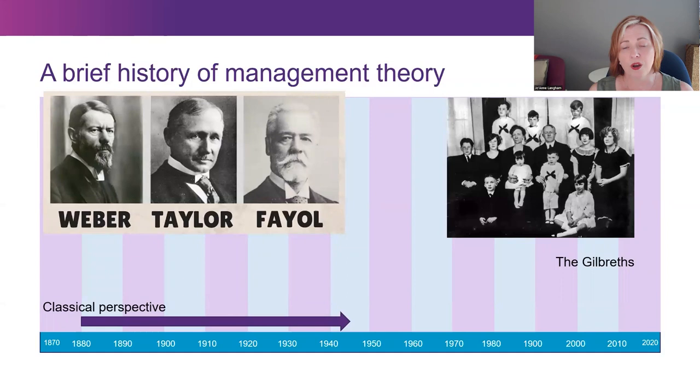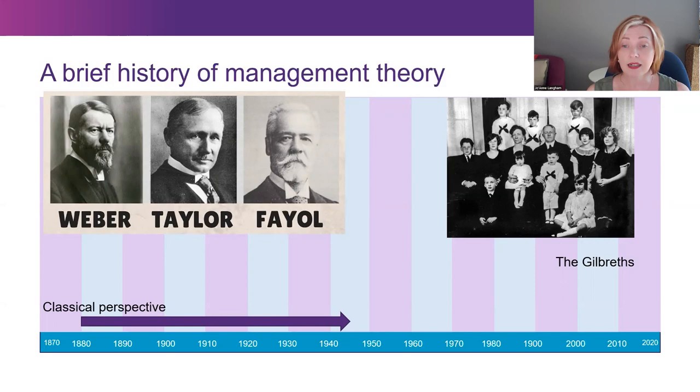This began the evolution of modern management with the classical perspective. This perspective contains three subfields, each with slightly different emphasis: scientific management, bureaucratic organisations and administrative principles.